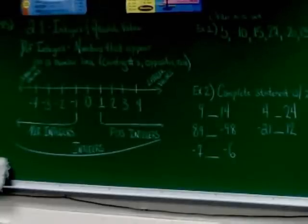One more time. Integers are numbers that appear on a number line or the counting numbers, their opposites, and zero.